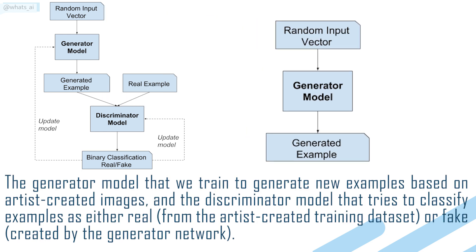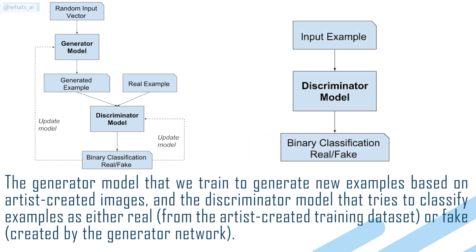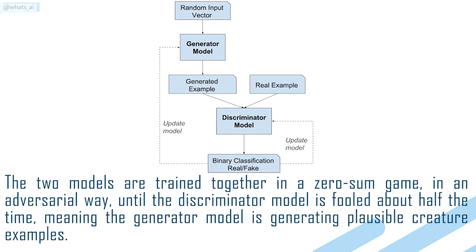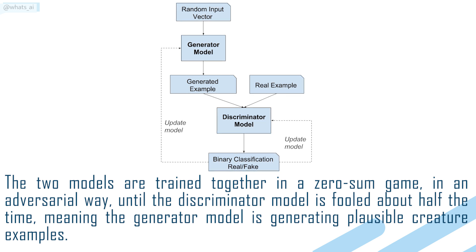The Generator Model, which we train to generate new examples based on artist-created images, and the Discriminator Model, that tries to classify examples as either real — from the artist-created training dataset — or fake, created from the Generator Network. The two models are trained together in a zero-sum game, in an adversarial way, until the Discriminator Model is fooled about half the time, meaning that the Generator Model is generating plausible creature examples.